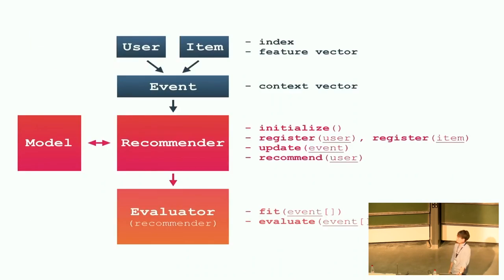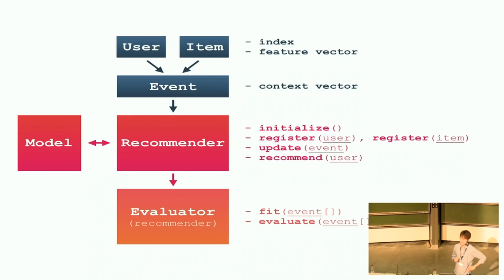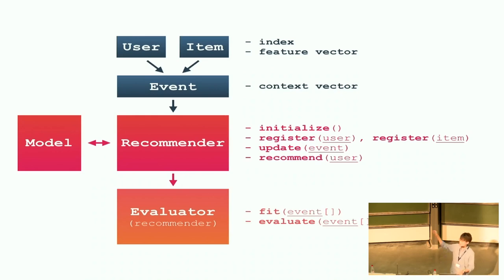This is an overview of the algorithm's internal code. We have separate User and Item classes, and each user-item interaction is represented as an event containing both user and item. Recent input to recommender systems is more complex — each user or item can have a feature vector, and events can have a context vector as input to the recommender. Behind it, we have a model, and by injecting the recommender into an evaluator we can see evaluation results.